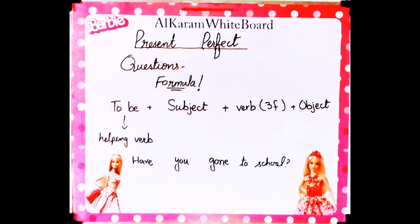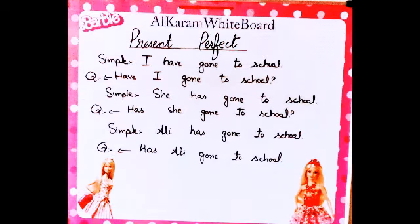Question tenses mein thoda sa difference hai: hum subject ki jagah aur helping verb ki jagah ko exchange kar denge — subject se pehle helping verb aayegi. Aur sabse zyada zaroori: end par question mark zaroor use karna hai. Examples: Have you gone to school? I have gone to school → Have I gone to school? She has gone to school → Has she gone to school? Ali has gone to school → Has Ali gone to school? Ali ke saath 'has' hai is liye starting mein 'has' aayega, aur end par question mark.